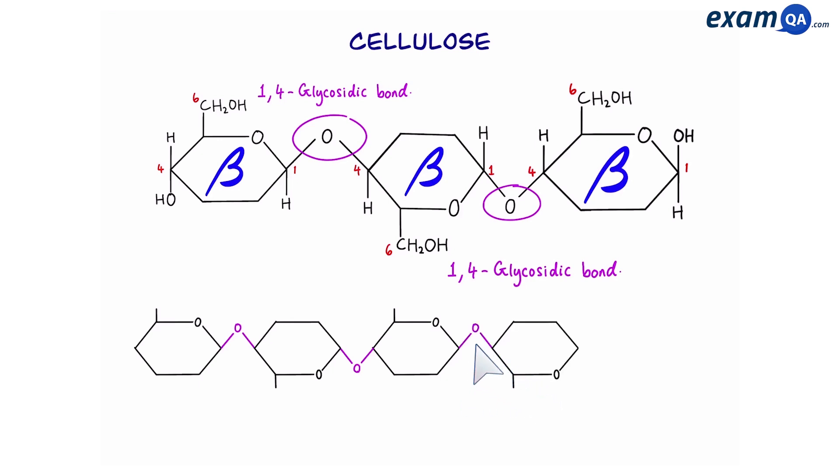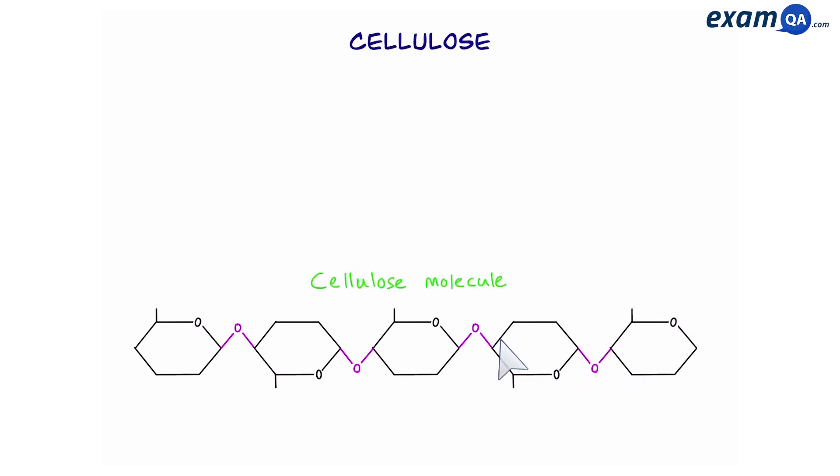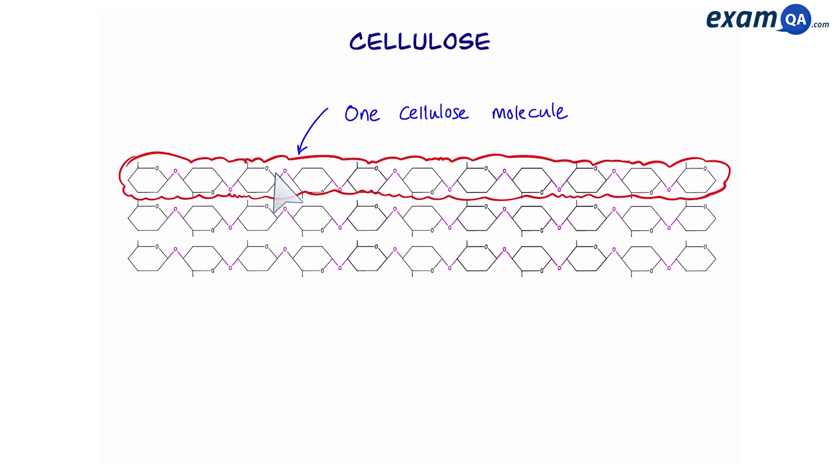And next, back to normal, and bond below, and so on and so forth. So this is a cellulose molecule. One long strand of beta glucose molecules joined together by 1,4 glycosidic bond, in which the beta glucose molecules are alternating. So this is one cellulose molecule.